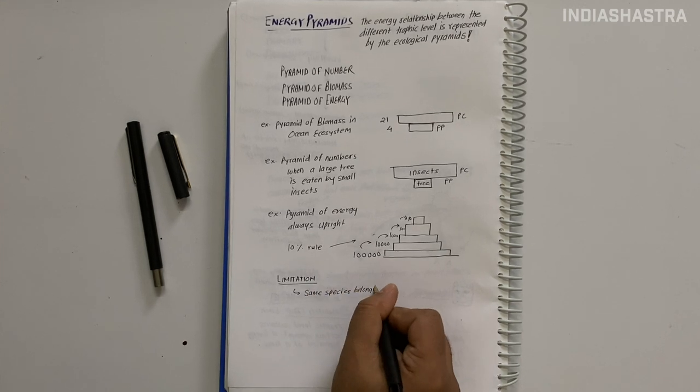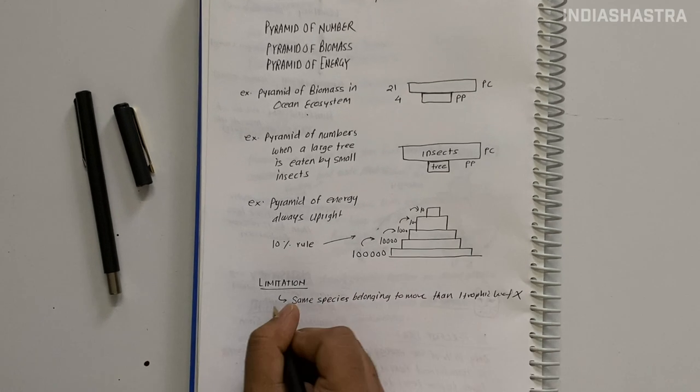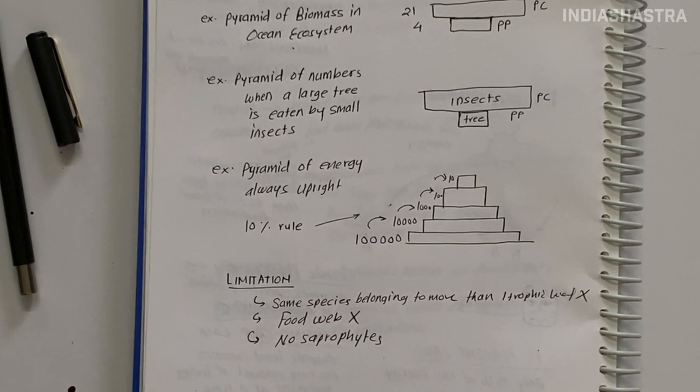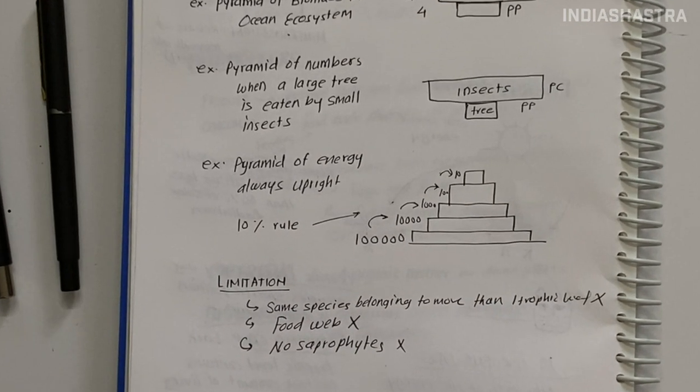Energy pyramids: The energy relationship between different trophic levels is represented by ecological pyramids. Their base represents producers or first trophic level while apex represents tertiary or top level consumer. Ecological pyramids are of three types: Pyramid of number, pyramid of biomass and pyramid of energy. In most ecosystems the three pyramids are upright except in some cases. The pyramid of biomass is inverted in ocean ecosystems. Also pyramid of numbers can be inverted. However, the pyramid of energy is always upright. Remember this - it can be a potential question.